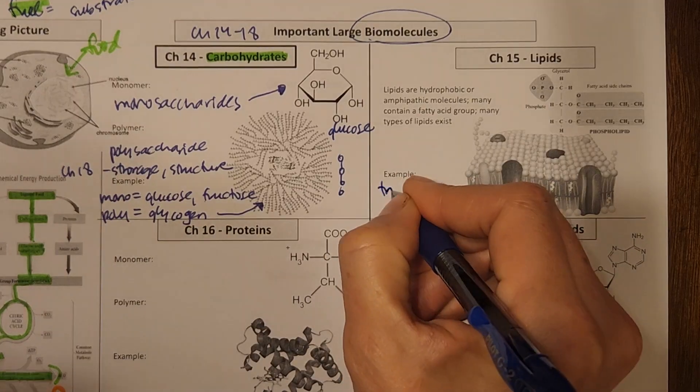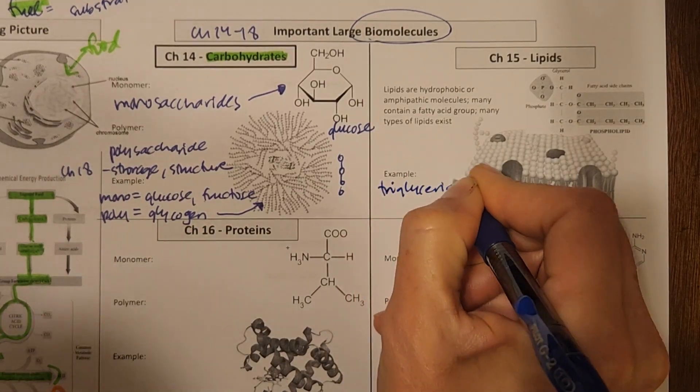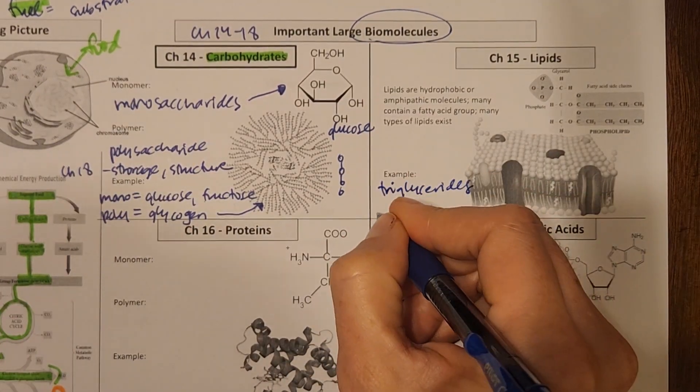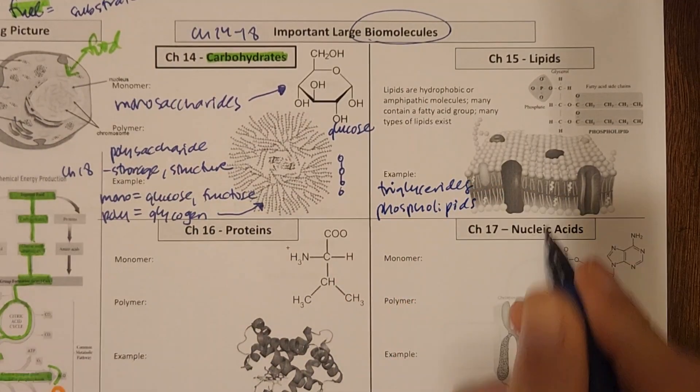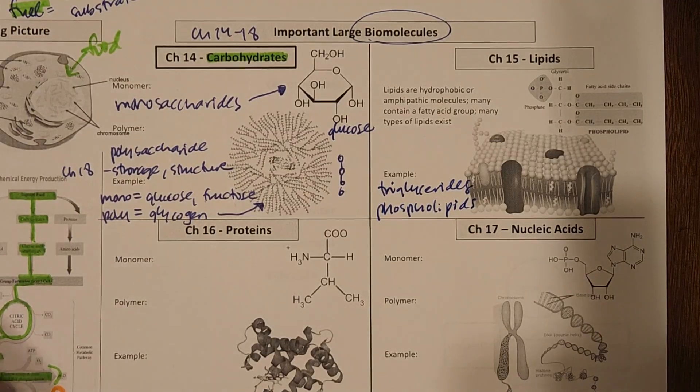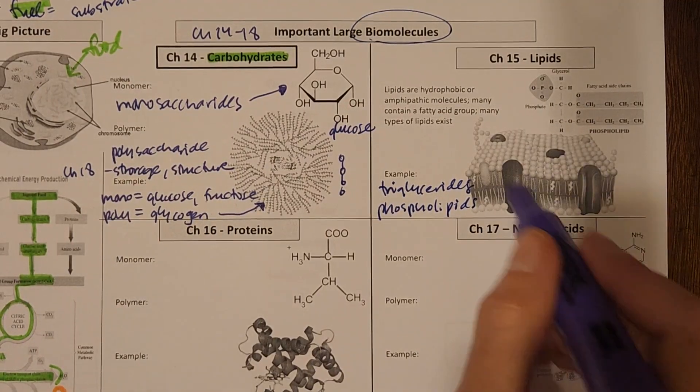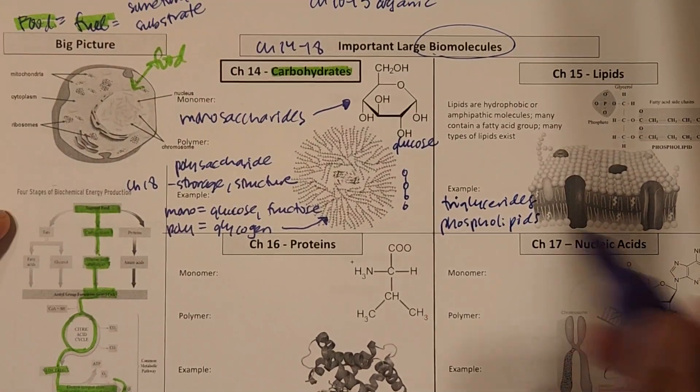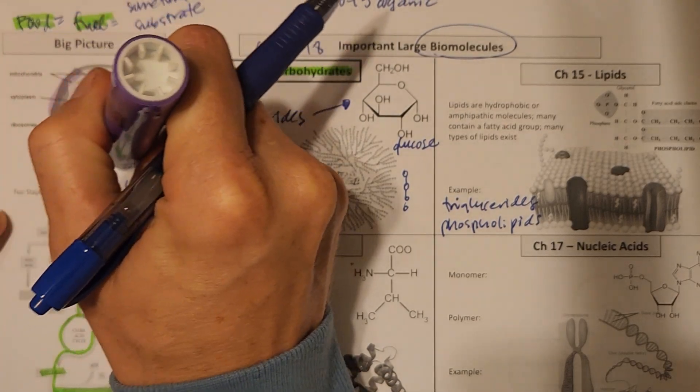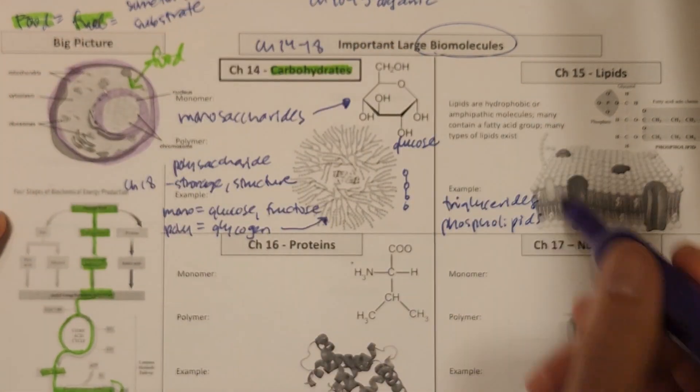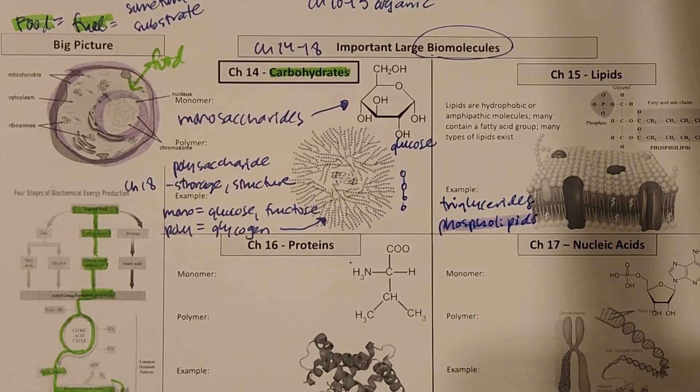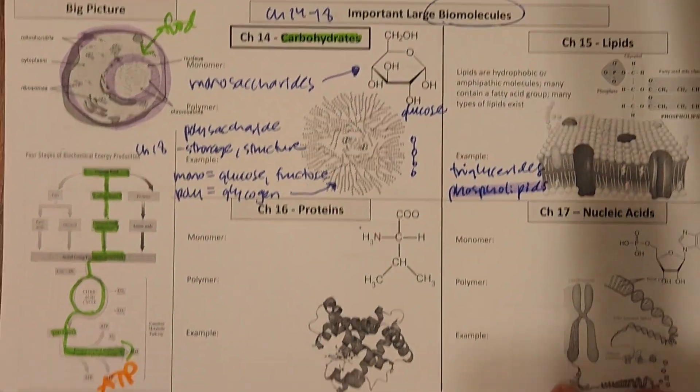A couple of examples, triglycerides, those are fats that we eat, and also phospholipids. And phospholipids are what make up our cell membrane. So that's what we see here is a close-up of the cell membrane. And if we were to add that over here, we've got phospholipids as our membrane around the cell and also around the nucleus. So we'll be seeing more of those in chapter 15.